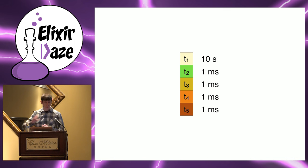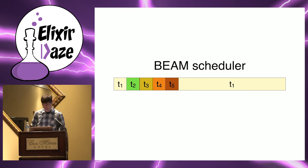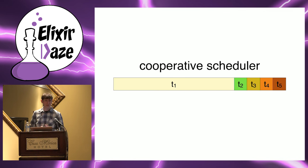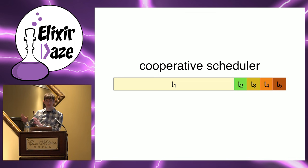Consider a web server on a single-core machine with one scheduler thread and five pending requests: the first one is CPU-heavy at 10 seconds, the remaining four are short at one millisecond each. With BEAM, after five milliseconds you have already served four out of five requests, and even while handling the long computation you can still take more work and serve it quickly. In contrast, with cooperative scheduling — as many popular technologies use today — when a task hits the scheduler it doesn't let go for as long as it needs CPU, so for the first 9,999 milliseconds nobody gets a response.